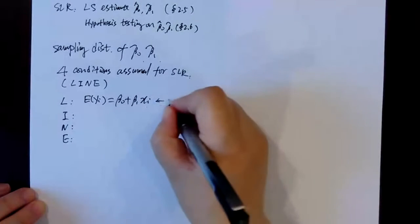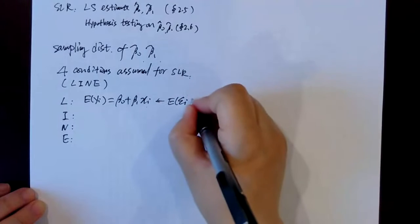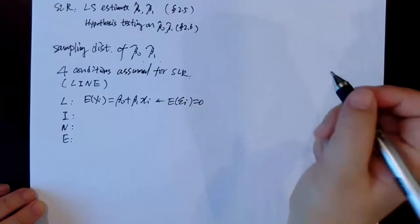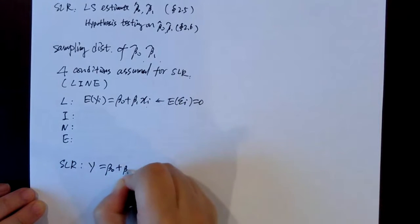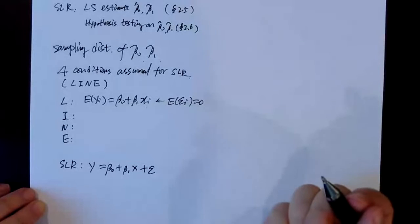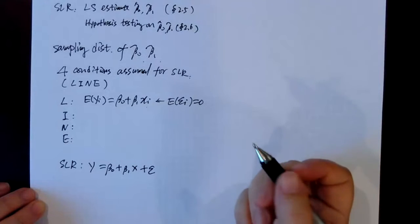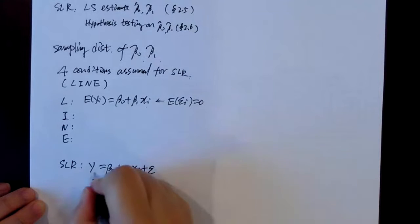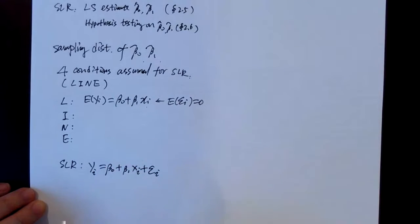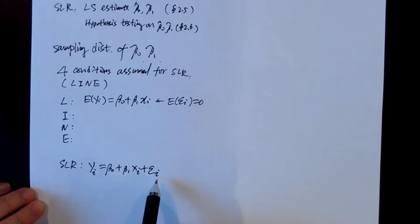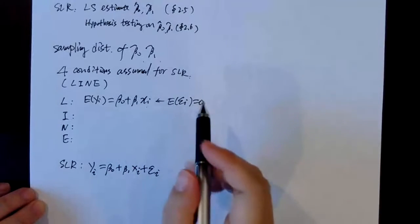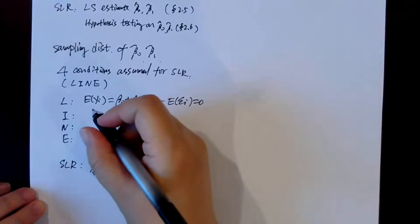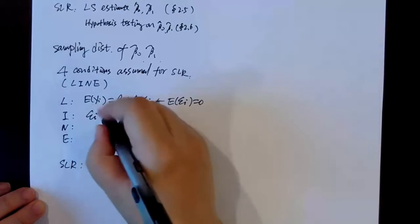The L condition stands for: E(yi) equals beta-0 plus beta-1 times xi, meaning E(yi) is a linear function of xi. This is derived from the model yi = beta-0 + beta-1*xi + epsilon-i, because E(epsilon-i) equals zero. So E(yi) reduces to just beta-0 plus beta-1*xi.